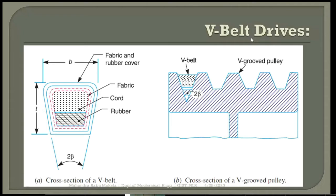The belt is made up of a number of materials like fabric, cord, rubber, and so on. Earlier, in the flat belt drive, the belts are made up of fabrics alone, or leather material alone, or rubber alone. But here, it is a composite material. The cords are molded into the rubber material, so that the strength of this V-belt is somewhat higher compared to the strength of the flat belt.